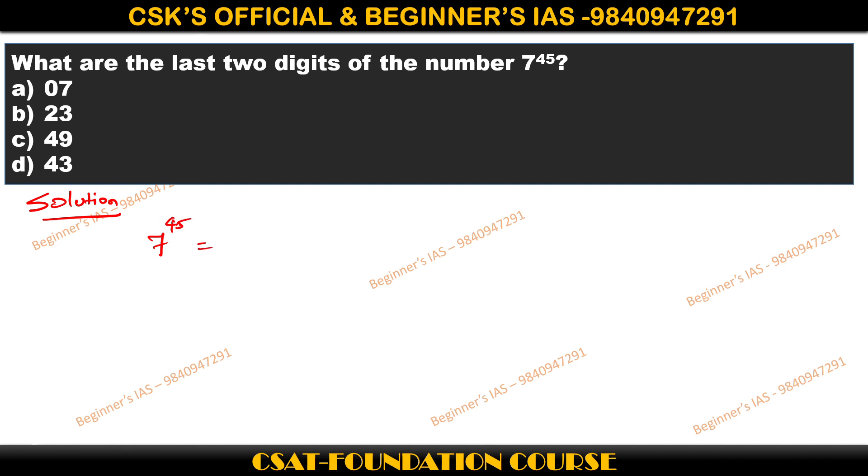You need to identify the last two digits, unit place and the tenth place. To solve this question, apply some logic. So what is the logic here? 7 power 1, which is equal to 7, so therefore I am taking the tenth place as 0.